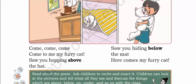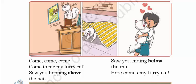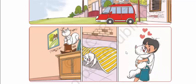Come to me, my furry cat. Saw you hopping above the hat — he saw his cat hopping above the hat. The cat is above this hat; that position is called above the hat. Saw you hiding below the mat. If the cat is there, that position is called below the mat. Here comes my furry cat! After all the searching, his cat has come to him. In this chapter we have studied positions — on top of the car, above the hat, below the mat. These are called positions.